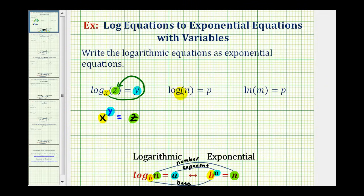Now looking at the second example, we have log n equals p. There's no base given, therefore this is common log, meaning the base is ten. So we have our base, we have our exponent, and we have our number. So starting with the base, we have ten raised to the power of p equals n.